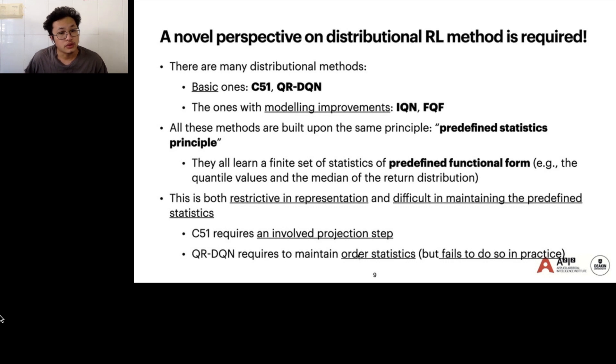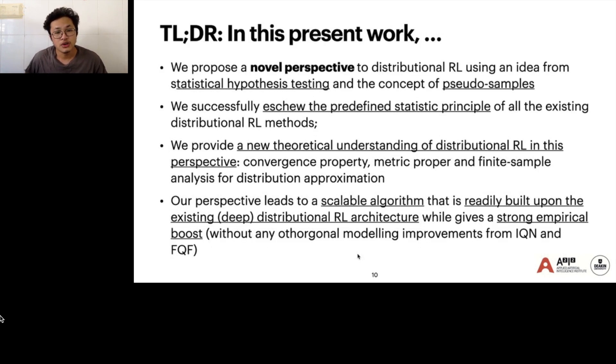There are many important algorithms in distributional reinforcement learning. The basic ones are C51, QRTQN, and ones with advanced modeling improvements include IQN and FQF. All these methods build upon the same principle, the so-called predefined statistics principle, and thus the restrictive representation is difficult in maintaining predefined statistics. In this work, we propose a new perspective to distributional RL using the idea from statistics for hypothesis testing and the concept of pseudo-samples. We successfully avoid the predefined statistics principle and provide a new theoretical understanding of distributional RL. Our perspective leads to a scalable algorithm that easily builds upon the existing deep neural network architectures.